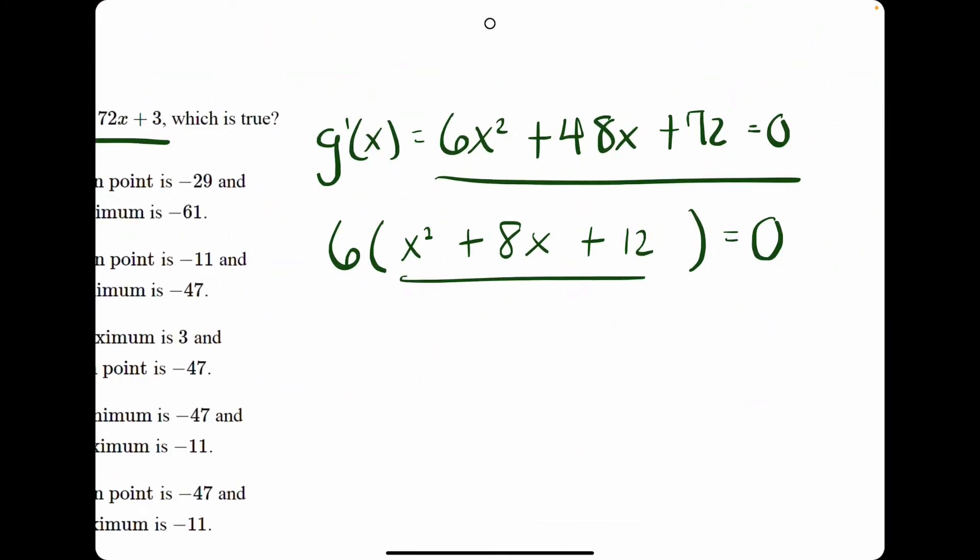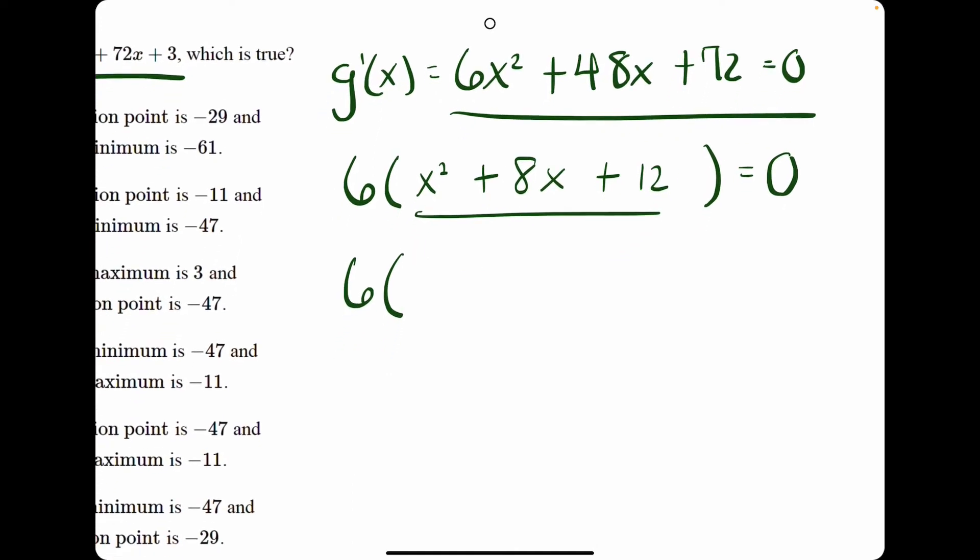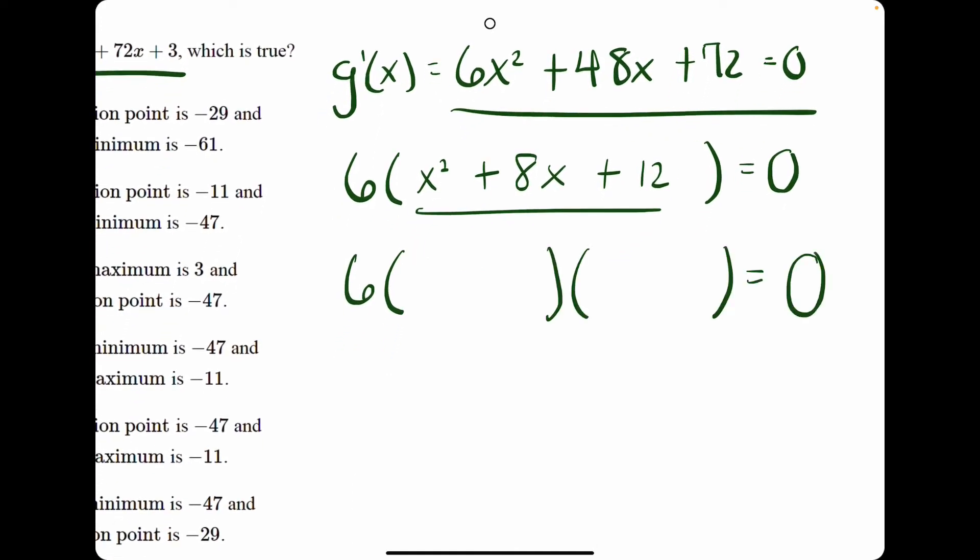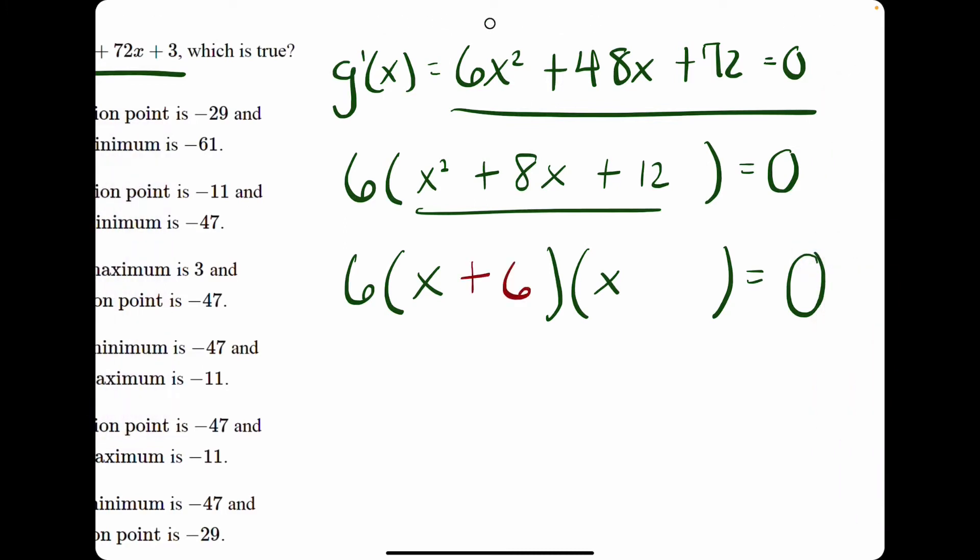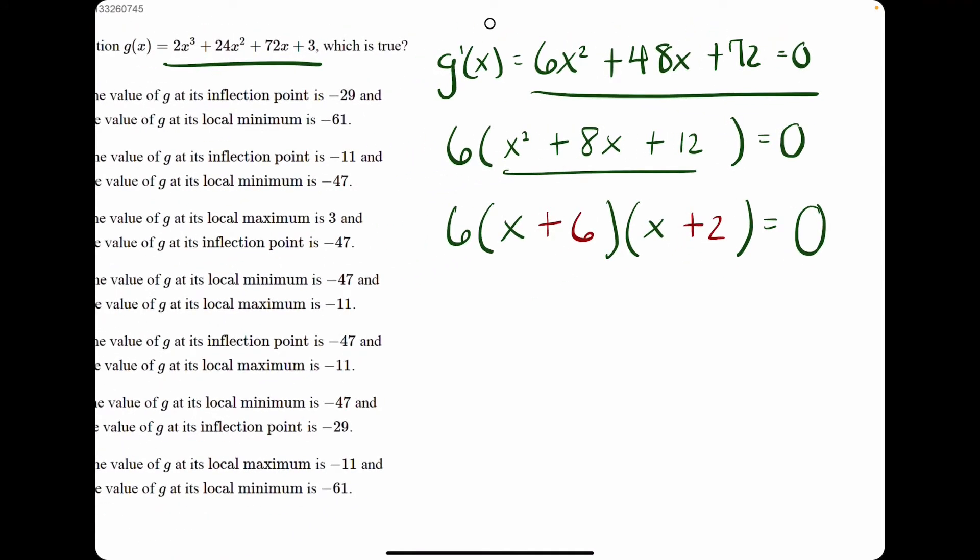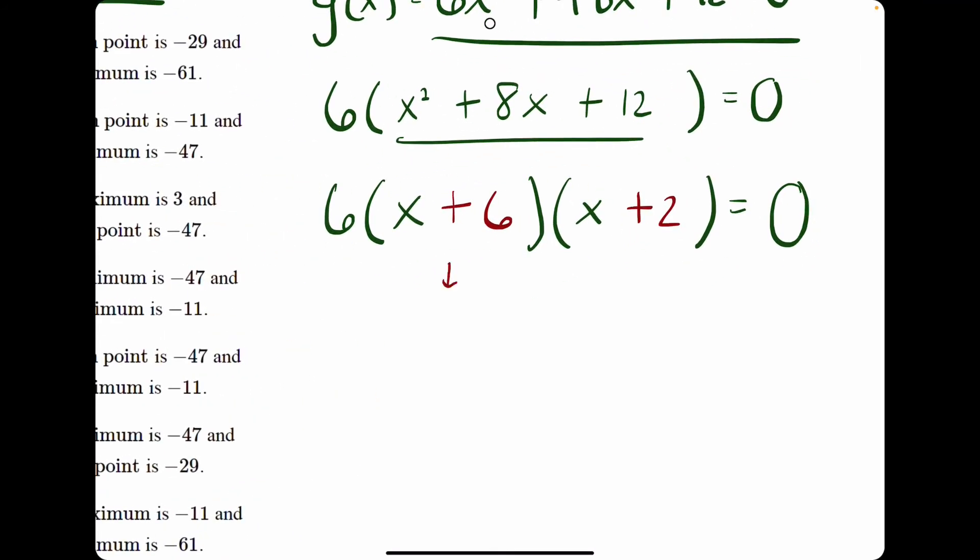Now the goal is to factor x squared plus 8x plus 12. We need two numbers that multiply to 12 but add to 8. Positive 6 and positive 2 multiply to 12 and they add to 8.